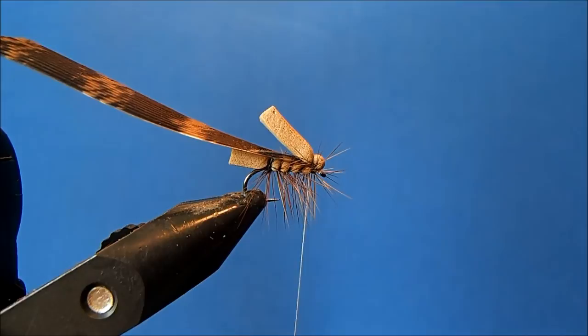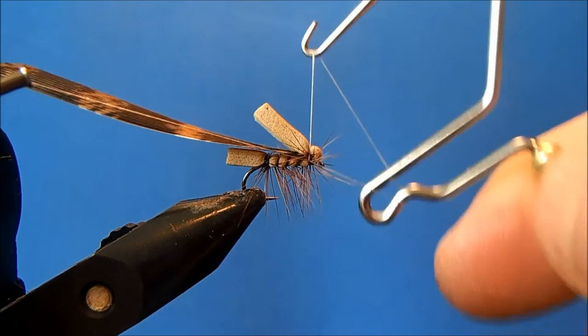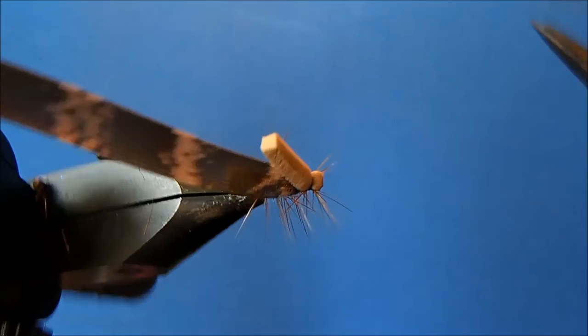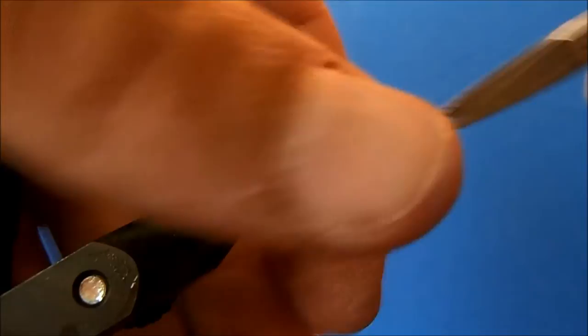And then I can whip finish under here. You can either whip finish underneath by the eye or you can take it right in through the head. I'll trim that off. Alright, now it's just real cleanup, so I'm going to clean up around the eye here where some of the hackle may have pulled through.